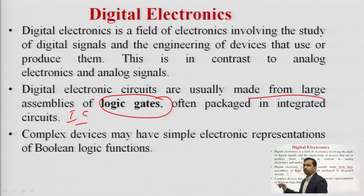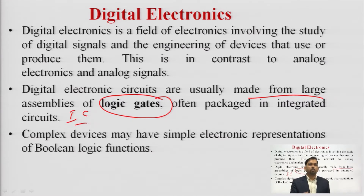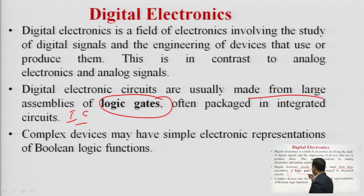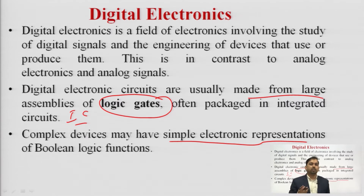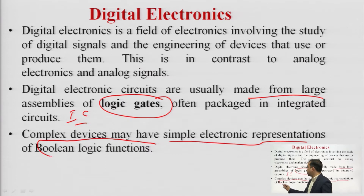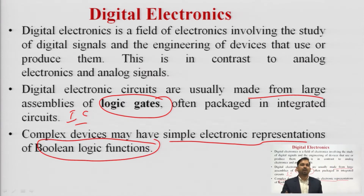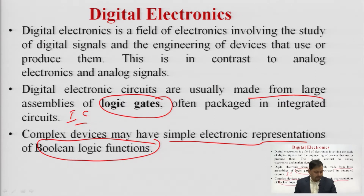We will see that these logic gates are available in the form of ICs — integrated circuits. These complex devices may have a simple electronic representation of Boolean logic functions. After logic gates, we will be having Boolean logic functions. With the help of Boolean logic functions, we can simplify the electronic representation.